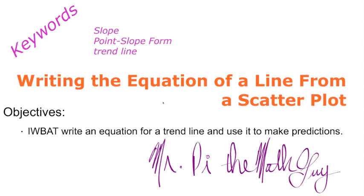Welcome to an algebra lesson. Today we're going to be writing the equation of a line from a scatterplot. Our objective today is I will be able to write an equation for a trend line and use it to make predictions. I'm Mr. Pi, the math guy. Before we get into this lesson, what I want to talk about are some key words here, some words that should be prior knowledge.